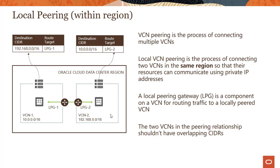The second rule is that peering is not transitive. If VCN 1 is peered with VCN 2 and VCN 2 is peered with VCN 3, it does not mean VCN 1 can reach VCN 3 by transiting through VCN 2. Transitive routing is not supported. If you want to peer VCN 1 with VCN 3, you have to create an explicit peering connection between them.